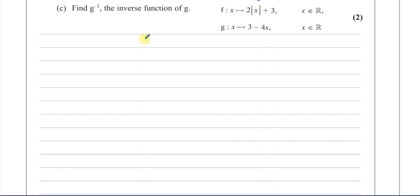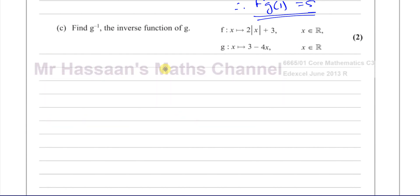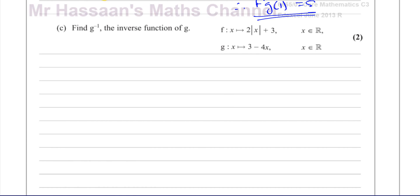Now for part c, it says find the inverse function of g. Now the inverse of a function is found by simply swapping the y and the x around, and then rearranging the formula. So basically, function g, you've got g of x equals 3 minus 4x. So the first step is, you call it y equals 3 minus 4x.